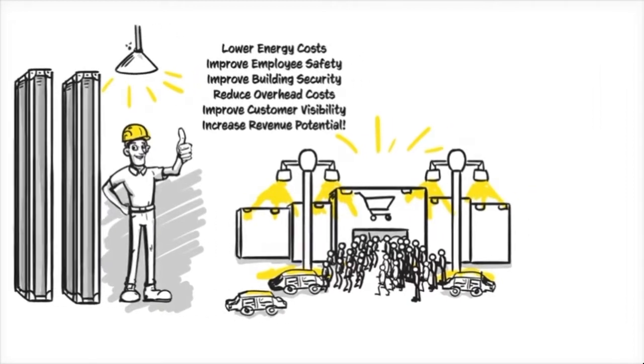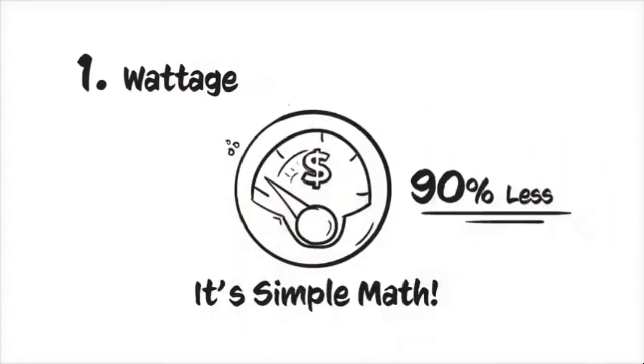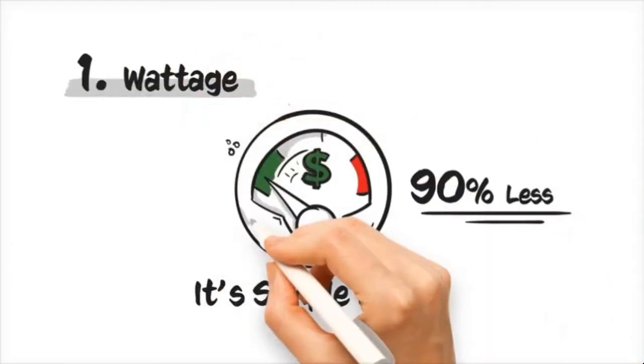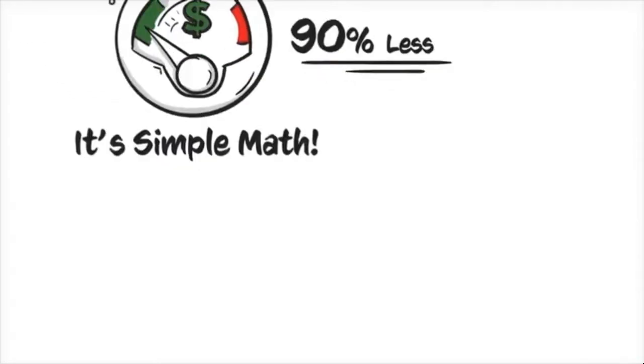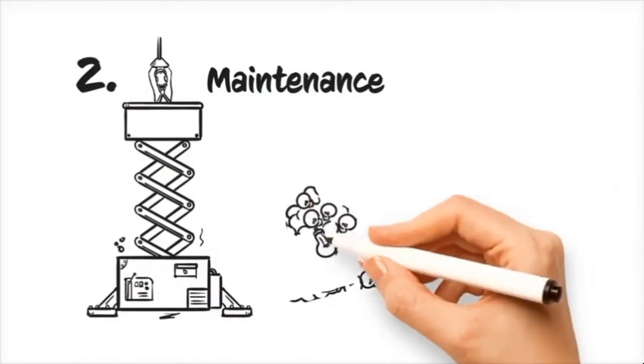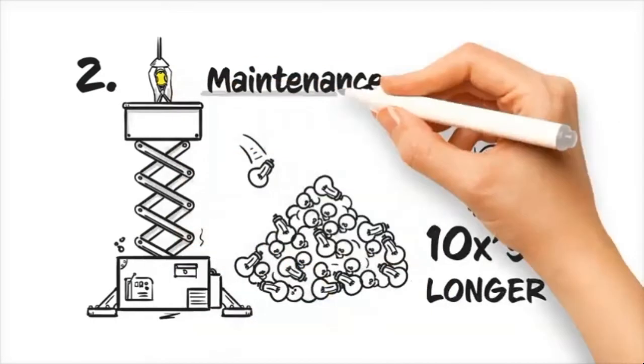And the process is simple. Reason number one: it's simple math. Wattage equals money. When you use 90% less wattage, you spend 90% less money. Reason number two: LED lighting lasts up to 10 times longer than older technology.